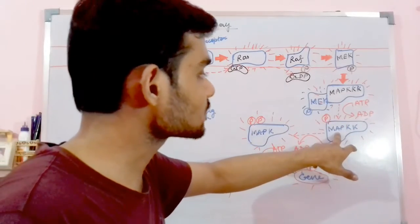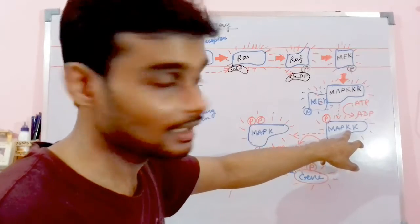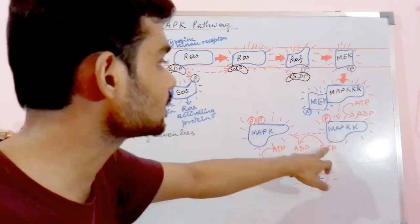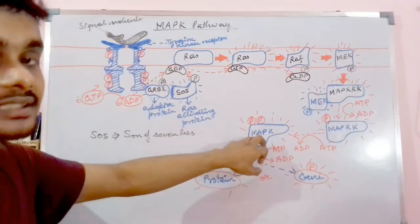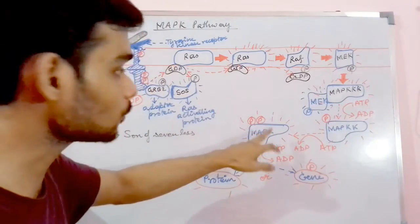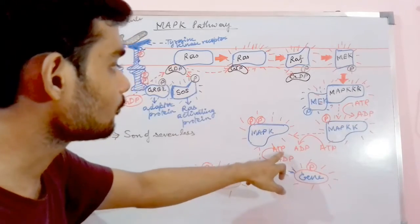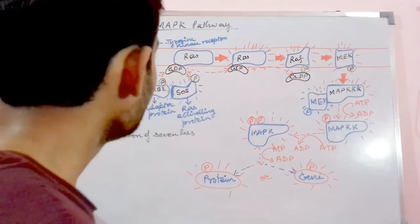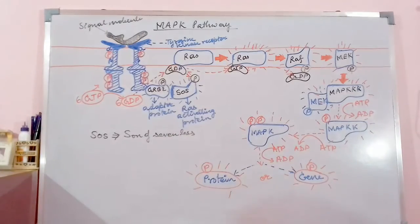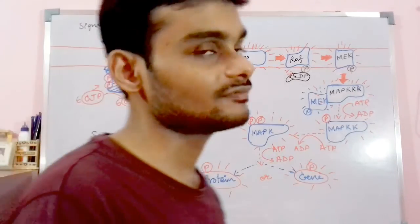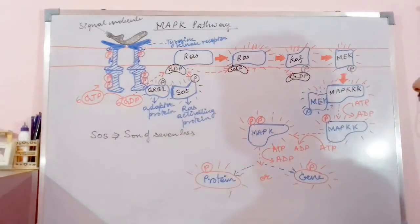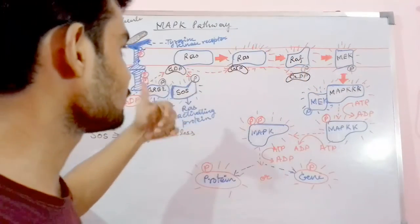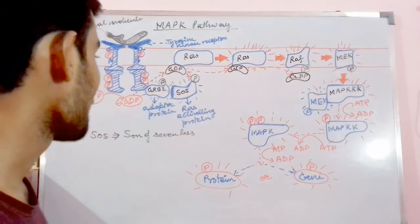As the kinase functionality goes on decreasing — the triple kinase reduces to double kinase, and double kinase reduces to single kinase — this is the same molecule acting in stages, not separate molecules. For convenience of explanation they have been depicted separately, but practically all of these things are happening on the same body. The MAP kinase finally, with help of an ATP, activates the protein or gene by donating the phosphate.